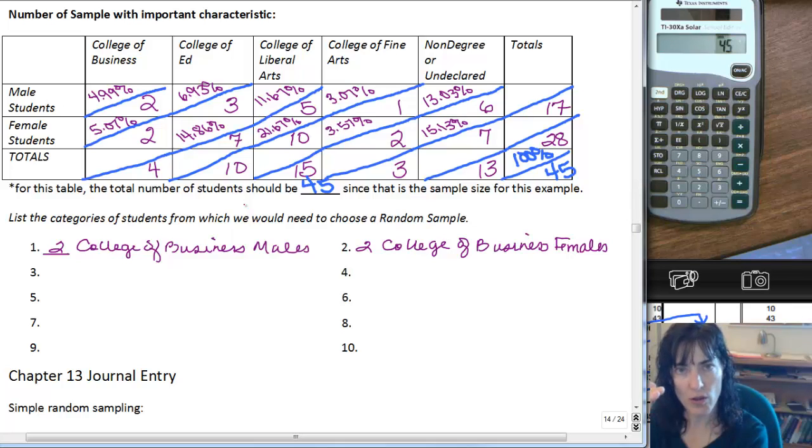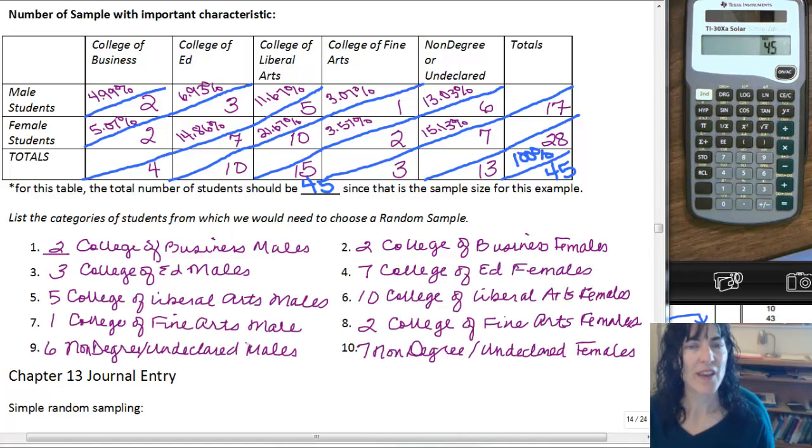List all female College of Business students and give them each a number. Say there's 500 of those. Take 500 numbers to random.org, have it shuffle them, and take the first two. Then do the same thing for every category of people. I'll fill out the rest of this and show you in a second.